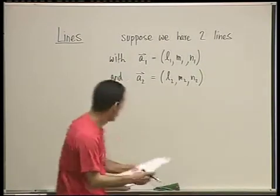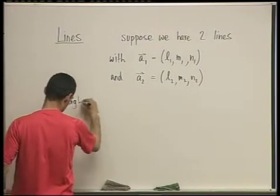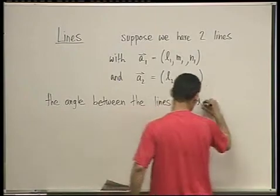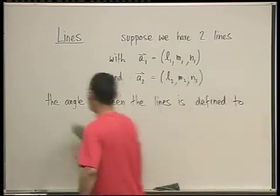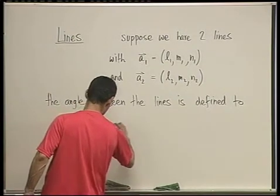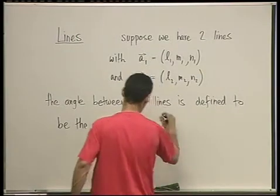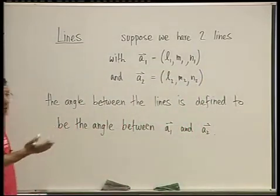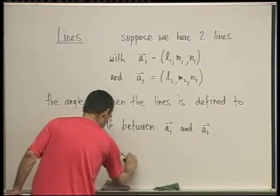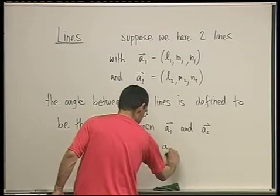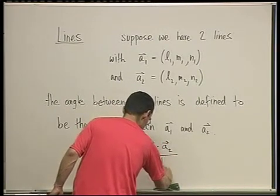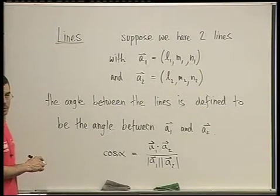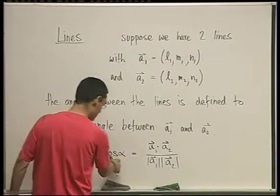The angle between the lines is defined to be the angle between a1 and a2. That's the definition, and we know how to find it. The cosine of the angle is the dot product divided by the product of their lengths, because the dot product is a1·a2 times the cosine. You do shift cosine, and you get the angle itself.